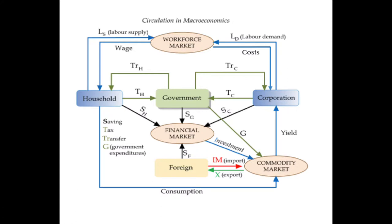Let's look at this flow diagram and notice first that households and businesses — or corporations — have switched sides. We have a factor market; let's focus only on labor as the only factor in production just to keep it simple. We have money flowing as wages from the workforce market, and households use the wage as income for consumption in the goods and services market, now called the commodity market. Again, the factor prices for labor, called a wage, is a cost to firms who demand labor as inputs to produce goods and services.